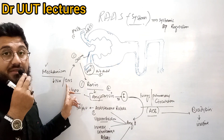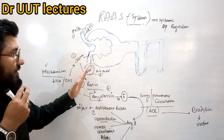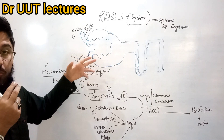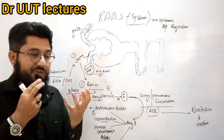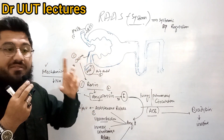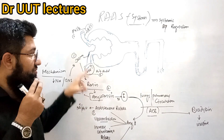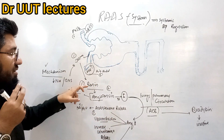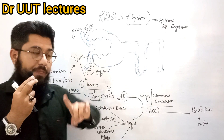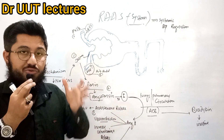Renin may also be released by the sympathetic nervous system. So there are two important causes: number one, low sodium; and number two, sympathetic nervous system. Both are responsible to stimulate the juxtaglomerular cells, and the juxtaglomerular cells are then responsible to release renin.